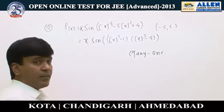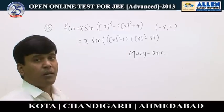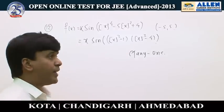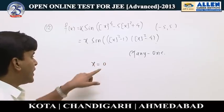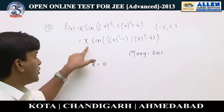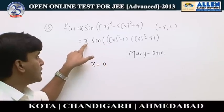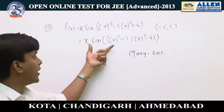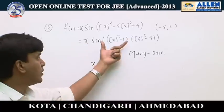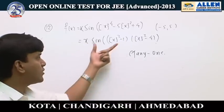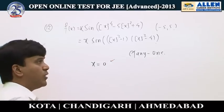Checking continuity on the interval minus 5 to 5: at x equals 0, f(0) equals 0. From the right, the product is 0; from the left, it is also 0. So the function is continuous at x equals 0.